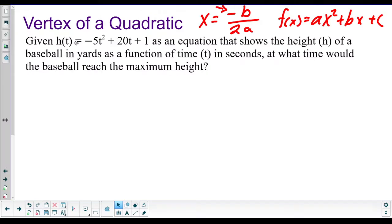So let's read the problem. It says, given that h(t) is equal to negative 5t squared plus 20t plus 1, as an equation that shows the height h of a baseball in yards as a function of time t in seconds. So you'll notice these are all t's. Normally, they're x's. They just replace them with t's because we're talking about time instead of x. So the x is time in this and then the y is the height of the baseball.